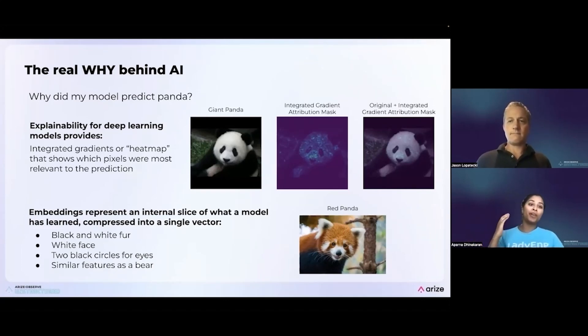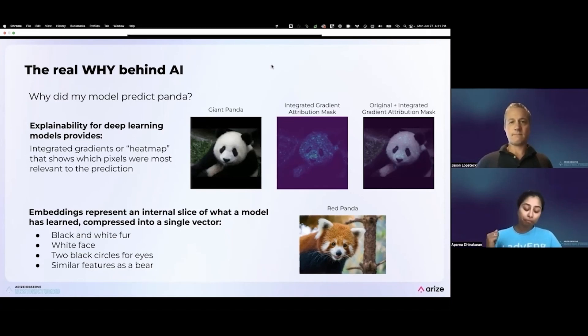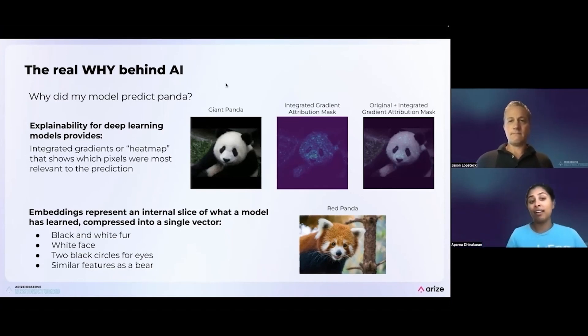And you might be wondering, well, isn't that what explainability is for? Isn't explainability supposed to give me my why? Well, explainability actually might not always be the best thing to help you troubleshoot this type of data. And I'll give you an example. This is an image classification use case trying to predict is this a panda or not. And if you use something like integrated gradients, what it would actually show you is which pixels in these images were most relevant to the prediction. But just knowing as a data scientist or an ML engineer, knowing what pixels may not always be the most helpful to help you troubleshoot why did the model make that decision.